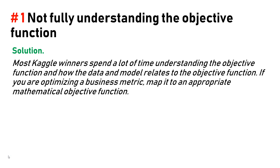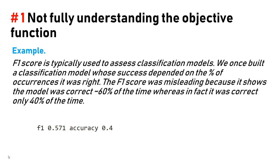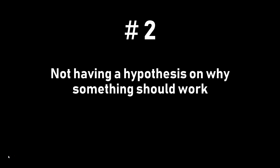If you are optimizing a business metric, map it onto an appropriate mathematical objective function. For example, the F1 score is typically used to assess classification models. We once built a classification model whose success depended on the percent of occurrences it was right. The F1 score was misleading — it showed the model was correct about 60% of the time, whereas in fact it was correct only 40% of the time. Number two: not having a hypothesis on why something should work.